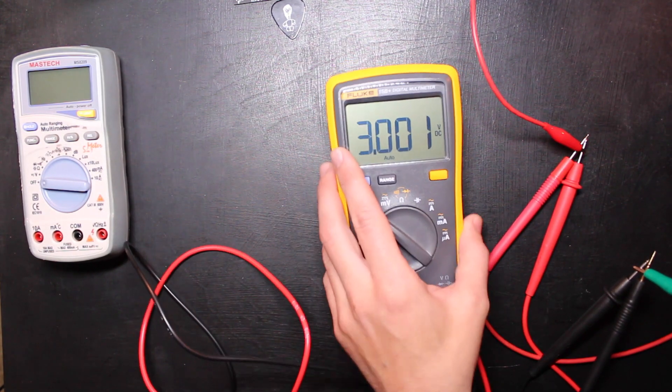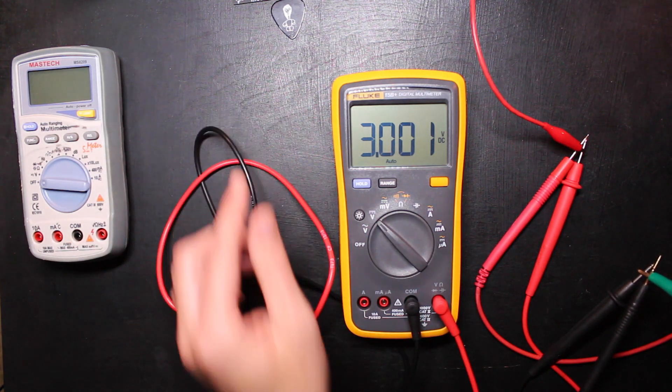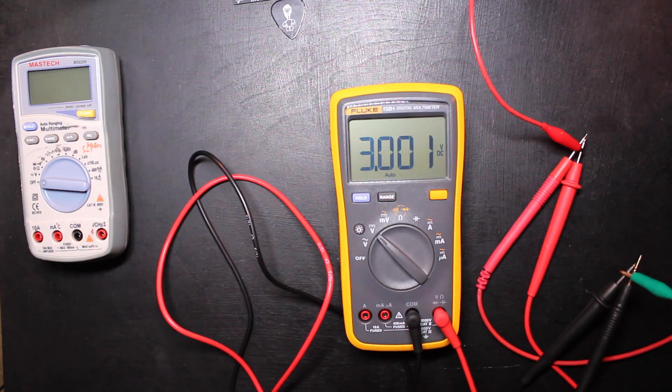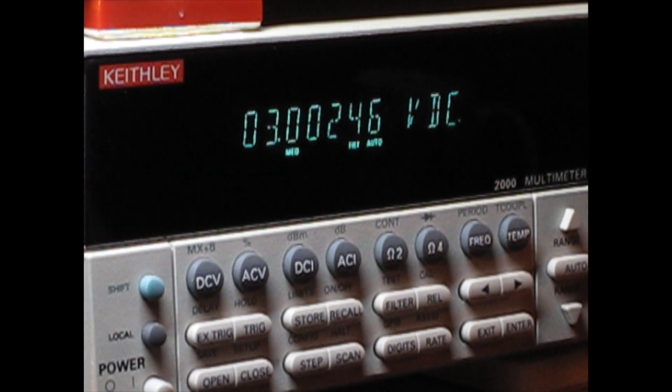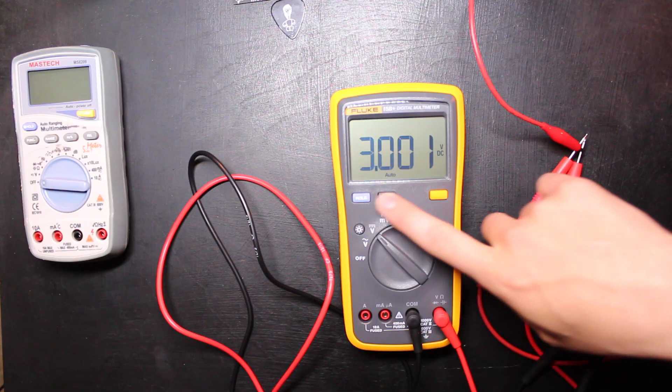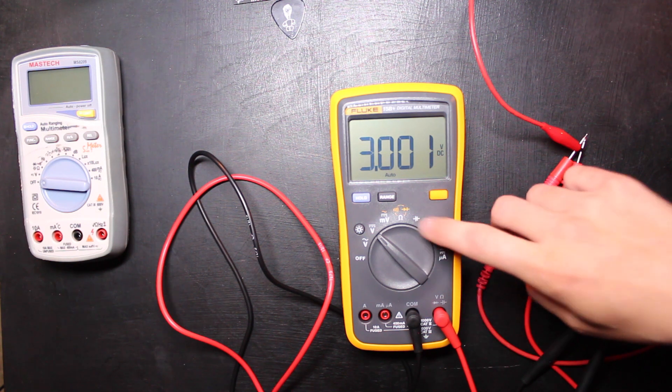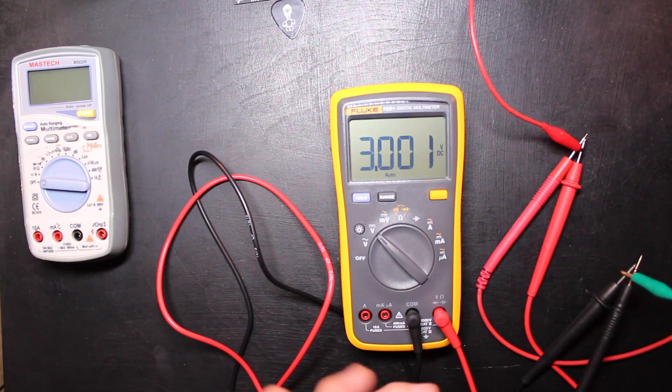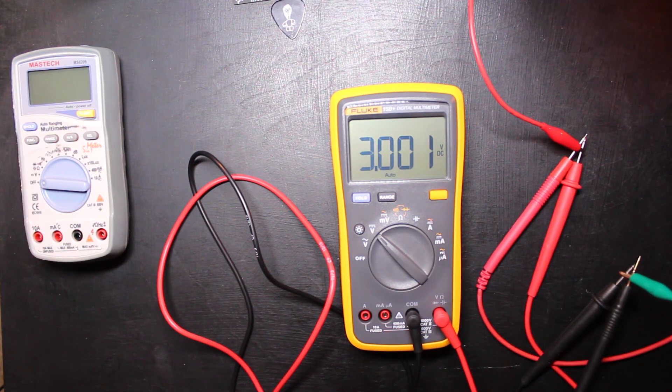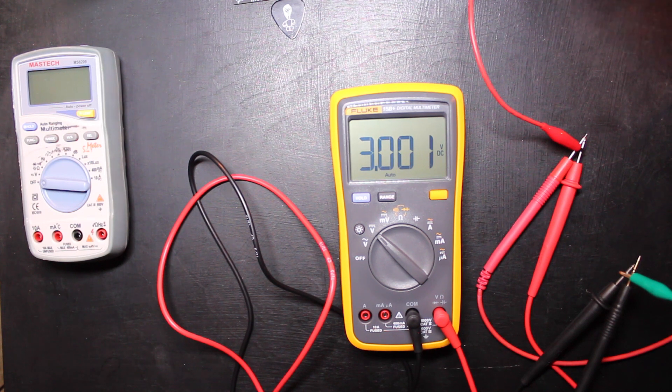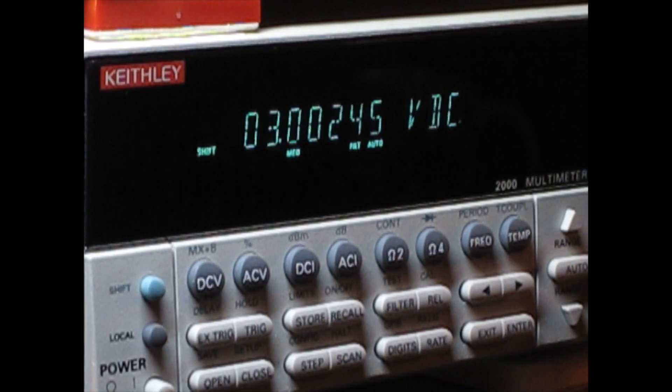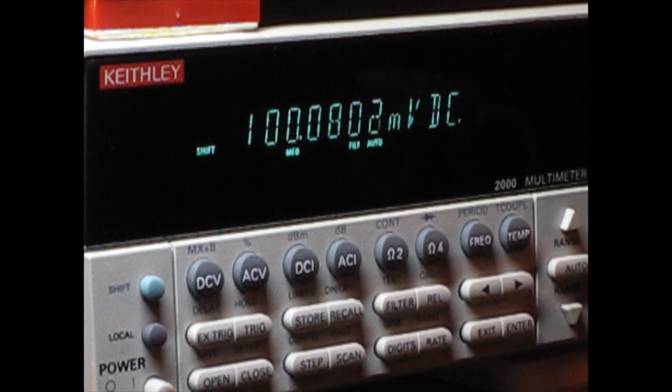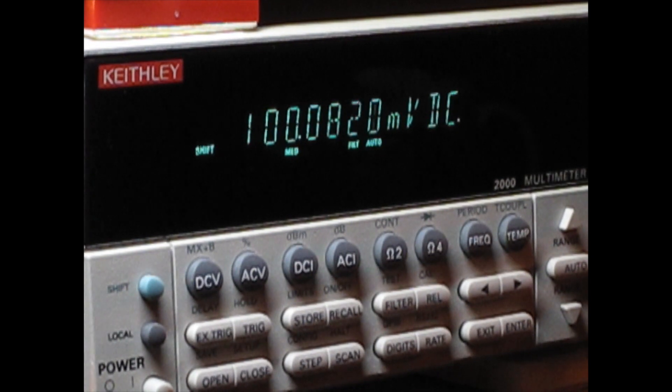Okay, so we're gonna measure voltage here first and you can see right now I'm putting three volts into it. The calibrated meter up here is 3.002, we're getting 3.001 over here on the Fluke and that's perfectly fine. So let's go ahead and drop this voltage down now. Okay, so there's a hundred millivolts and you can see here we've got 100.08.